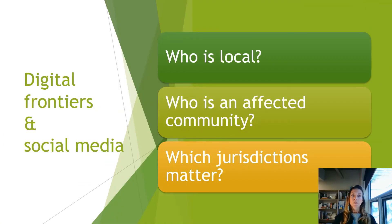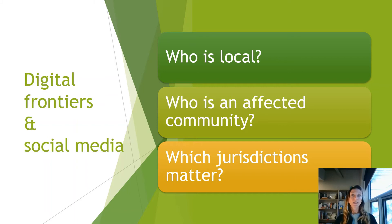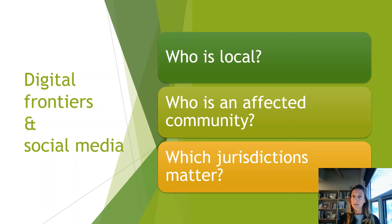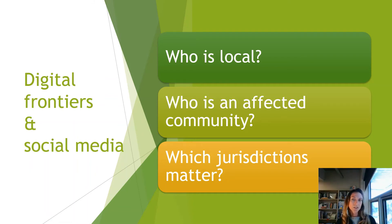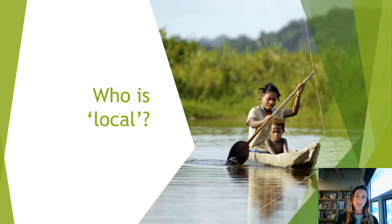That first issue is the idea of digital frontiers and social media. You would have done some work around identifying stakeholders for your impact assessment — setting out the scope or boundary of the assessment. A major part of that step is defining the local community: who is the affected community? With the advent of social media connecting us all in ways never before possible, we're seeing really interesting new questions: who is local? Who is an affected community? Which jurisdictions matter? Where do you draw the line when undertaking an impact assessment for an issue that arguably has global implications?